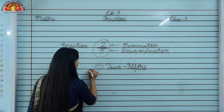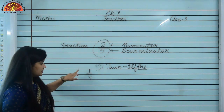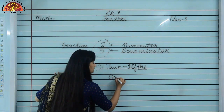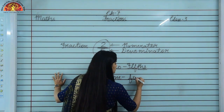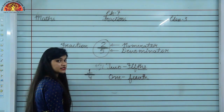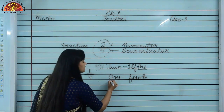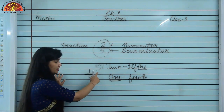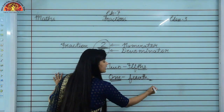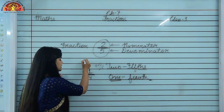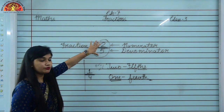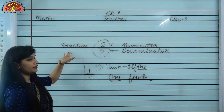We are taking one more example: 1 upon 4. We can write it as 'one fourth.' Notice we are not using 's' here. Why? Because the numerator is 1. Whenever you have 1 in the numerator, you will not write 's.' So for 1 upon 4, we write 'one fourth,' not 'one fourths.' The number on top is the numerator and the number on the bottom is the denominator.